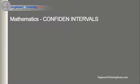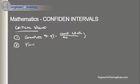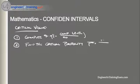Now let's talk about how you find the critical value. There's a process to doing this. The first step is to compute alpha, where alpha is equal to 1 minus the confidence level divided by 100. Number two, we find the critical probability, p-star, which is calculated as 1 minus alpha divided by 2.